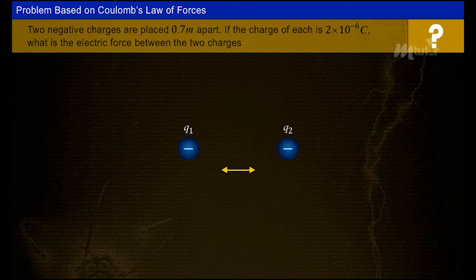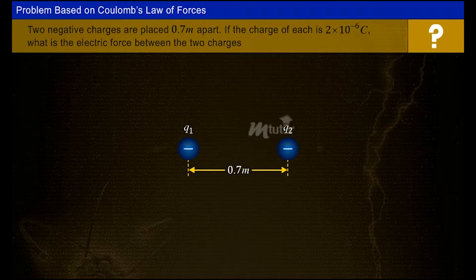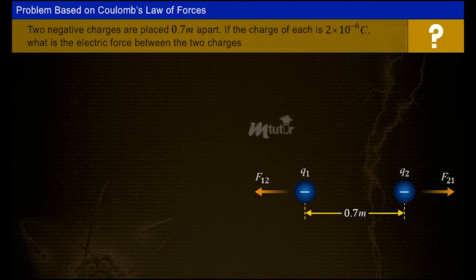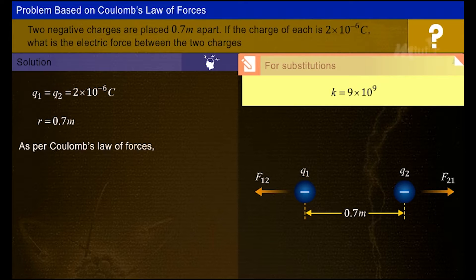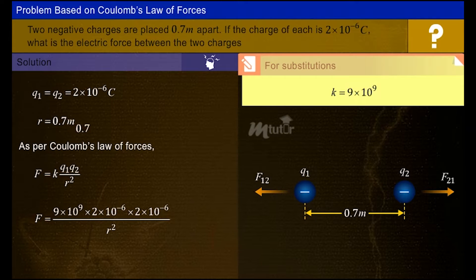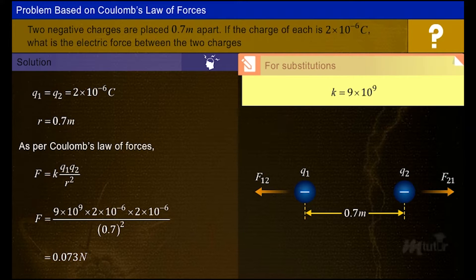Two negative charges are placed 0.7 meters apart. If the charge of each is 2 × 10⁻⁶ coulombs, what is the electric force between them? Let q1 = q2 = 2 × 10⁻⁶ C and r = 0.7 m. Applying Coulomb's law, F = k × q1 × q2 / r², and substituting the values, the force between the two charges is obtained as 0.073 newtons.